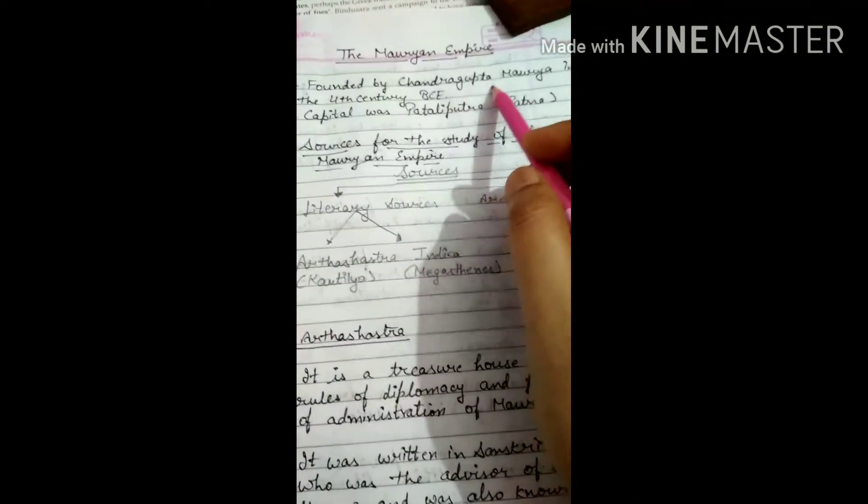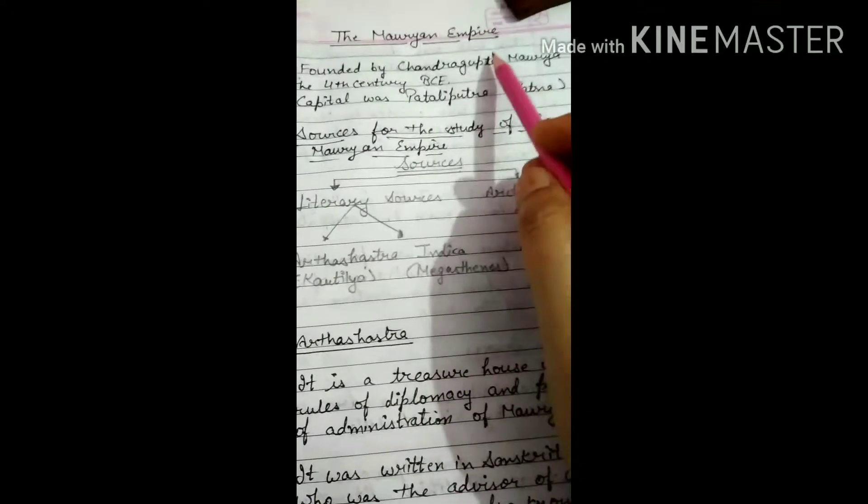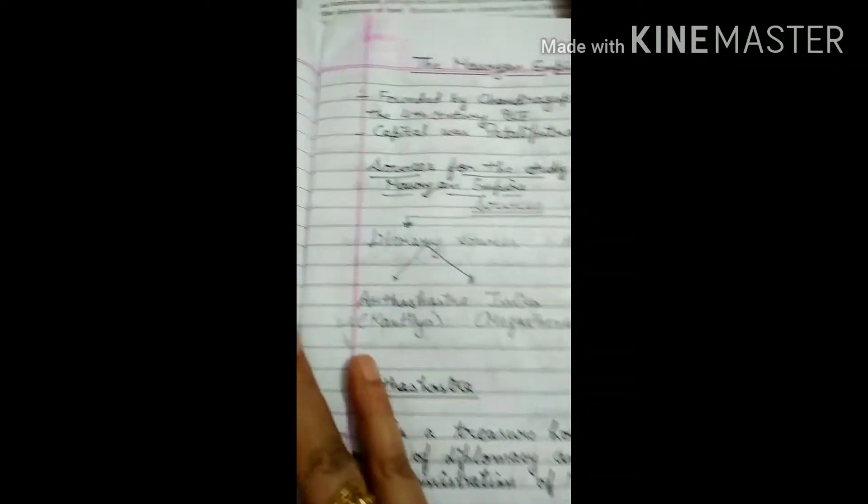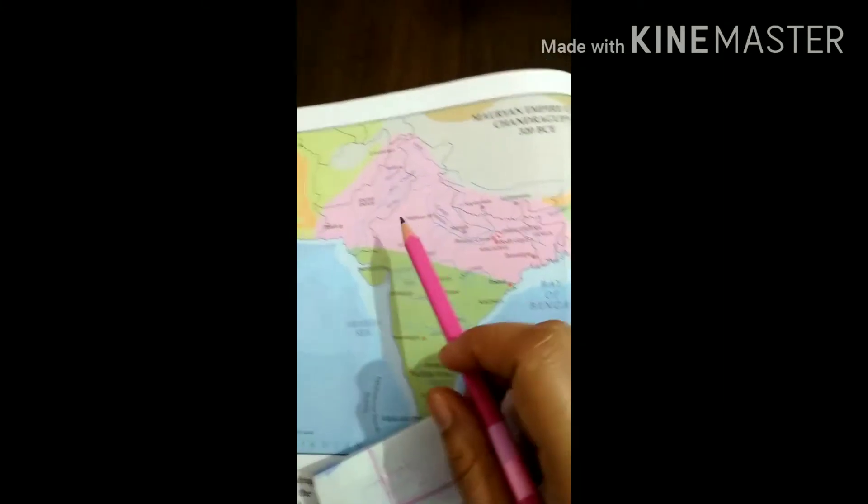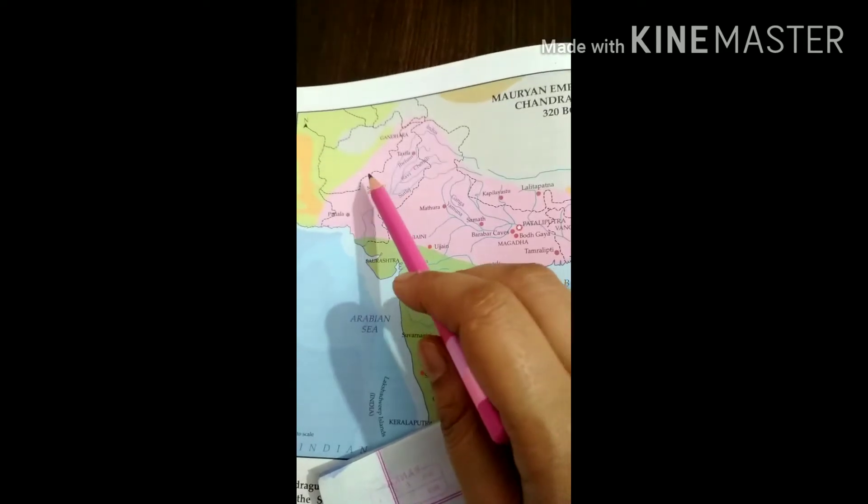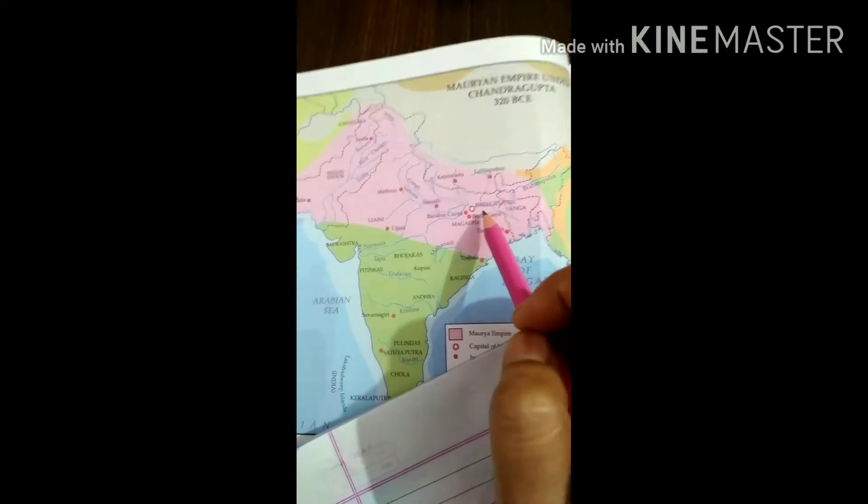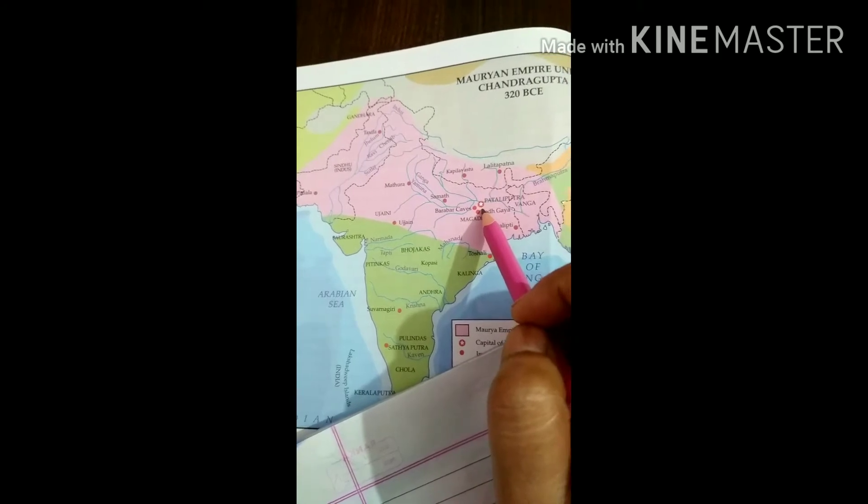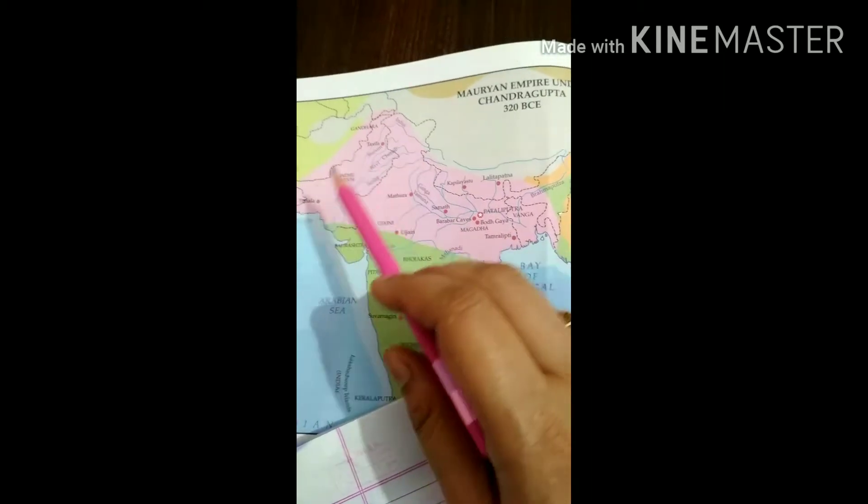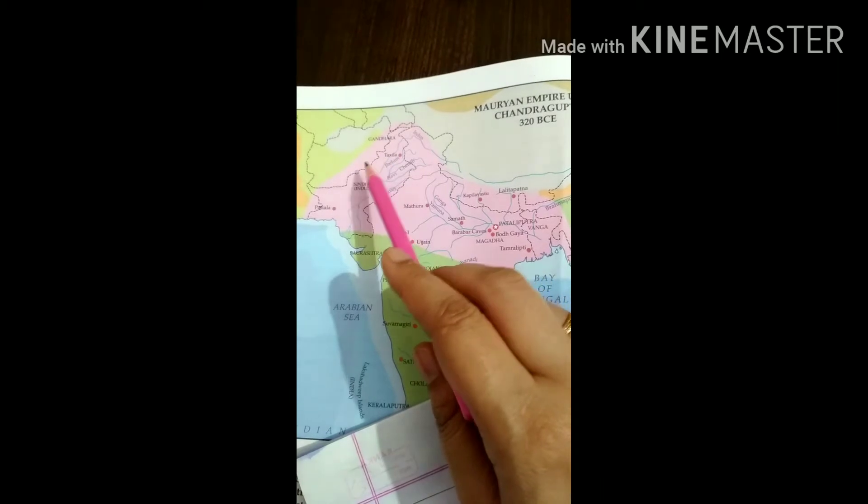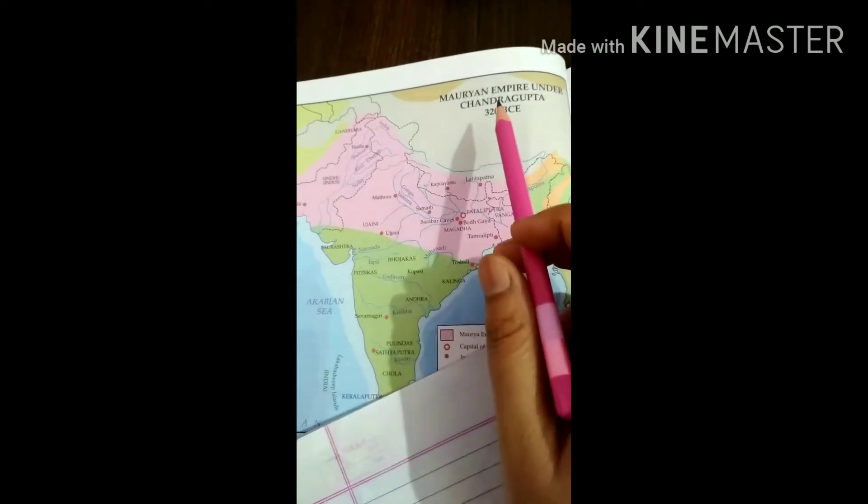The Mauryan Empire was founded by Chandragupta Maurya. So Chandragupta Maurya was the first person, first king in India, who established an empire in India. You can check it in this map. This is the pink color area in India, Pakistan, some part of Afghanistan zone. So in this way, this part was under Chandragupta Maurya.